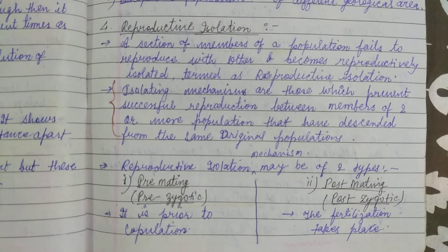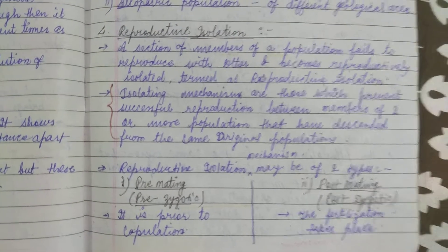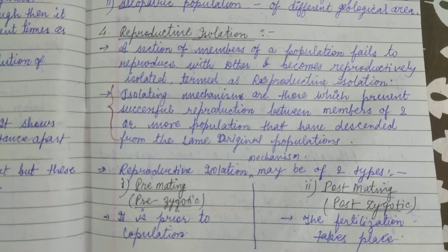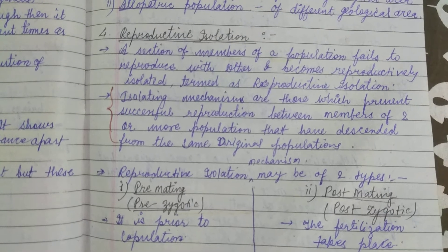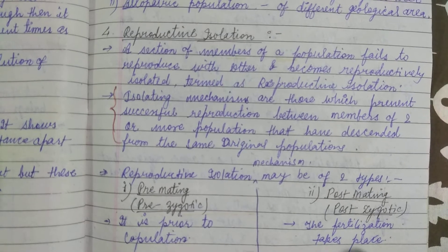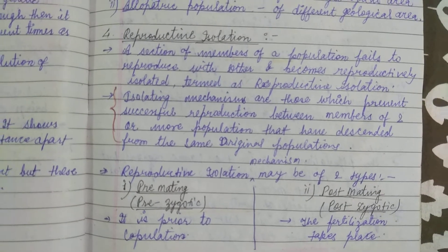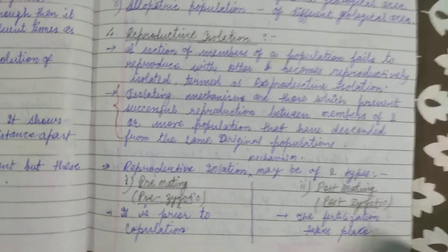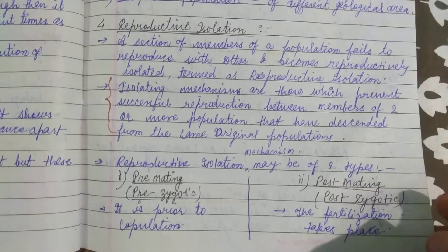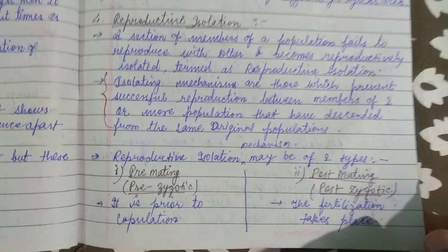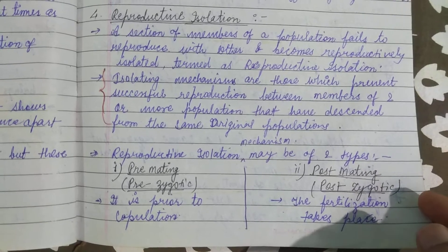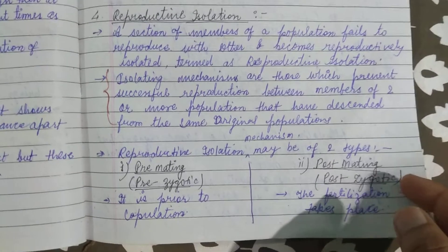Today we will see reproductive isolation types, all its definitions and all its subtypes. Reproductive isolation means that a member of a population can be isolated with some members. The mechanism has two types: pre-mating and post-mating. Pre-mating means pre-zygotic and post-mating means post-zygotic — before fertilization and after fertilization.